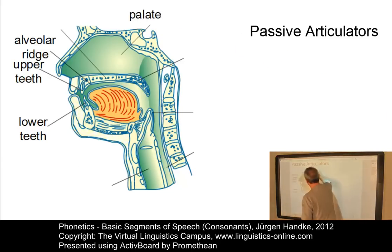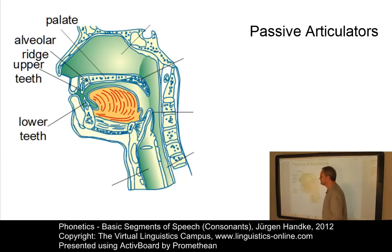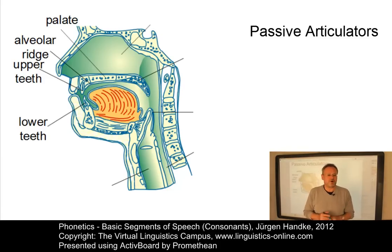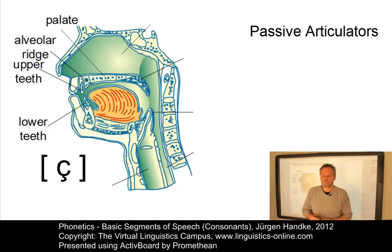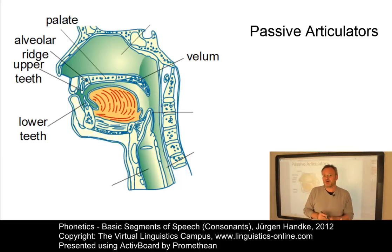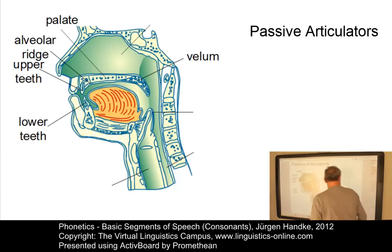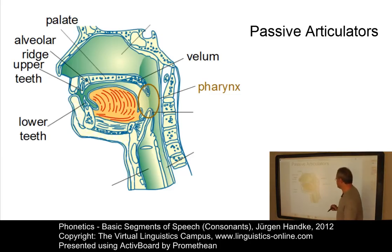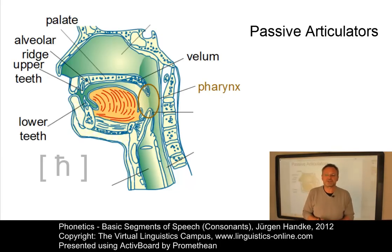The palate, or hard palate, is an area for a large number of consonants, often referred to as the roof of the mouth. Then we have the soft palate, or velum, which is a broad band of muscular tissue in the upper region of the mouth. Typical consonants are K or G. Another area is the pharynx, which is used as a contact area for the production of some consonants.